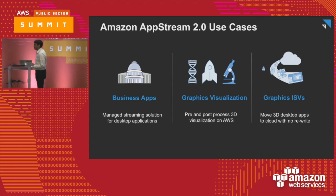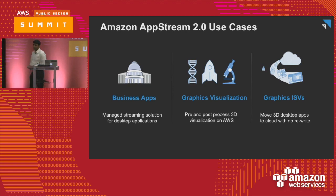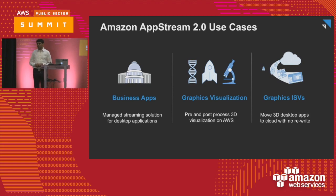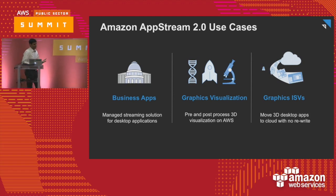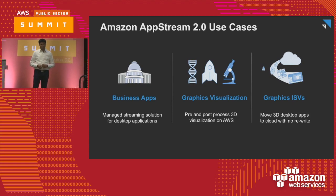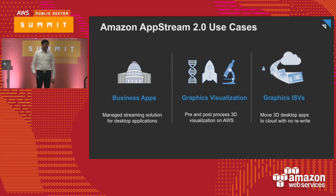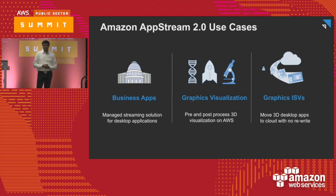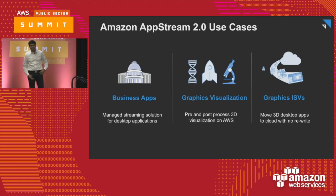The third large use case is around software vendors who want to take their existing desktop application investments and start delivering them through a browser. Use cases range from sales demos — instead of providing a large desktop app to download, you just send a link that a user clicks and it opens in the browser straight away — to training and workshops where you set up a lab-type environment for students, whether K through 12, higher education, or as a software vendor providing training curriculum. There are no physical labs to set up for that use case.